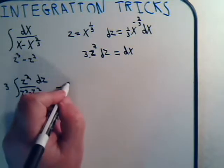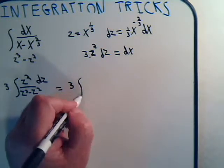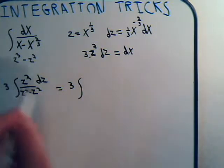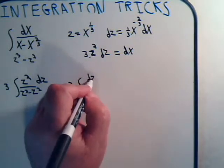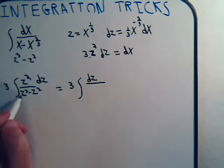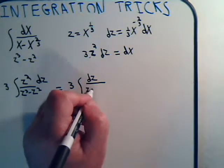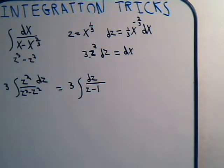And this will equal 3. The integral of this will just be 1. So I'll have dz divided by z squared. That would be z minus 1. And there it is.